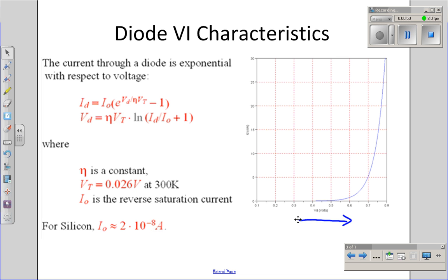Typically for silicon, it's about 2 times 10 to the minus 8 amps. V sub d is the constant nu, which is roughly 2 for silicon, times V sub t, about 26 millivolts at 300 Kelvin.